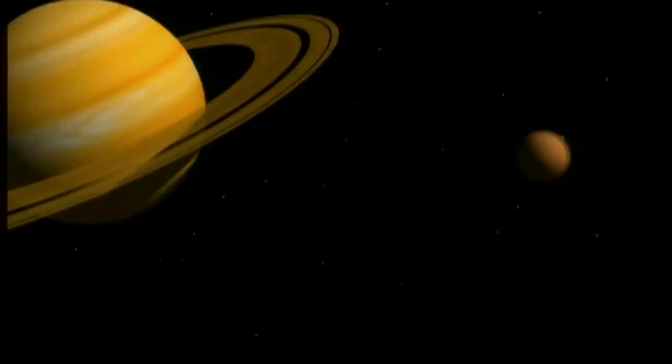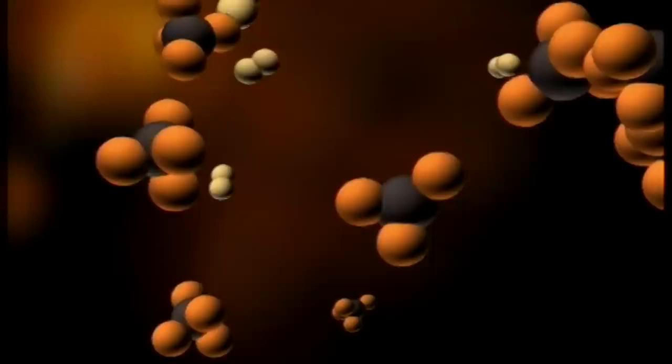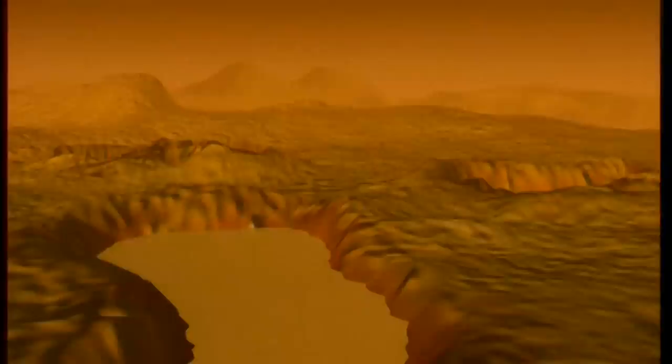Titan reste voilé dans la brume, mais Voyager réussit à détecter la présence de molécules organiques, décomposées à base de carbone, tout comme ceux qui ont été à l'origine de la vie sur Terre. On ne peut qu'en deviner sa surface, car Voyager ne peut rien voir à travers cette épais brouillard.